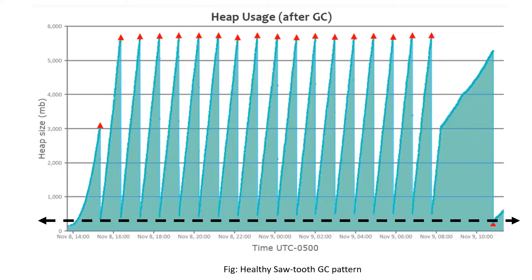This is the first type of GC pattern. I am calling this a healthy sawtooth pattern. You can see there is a full garbage collection event running, and then the memory drops all the way to the bottom. And then once again, as traffic starts to come up, the application creates more and more objects.